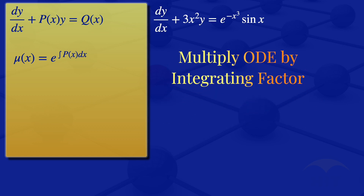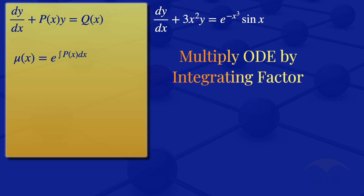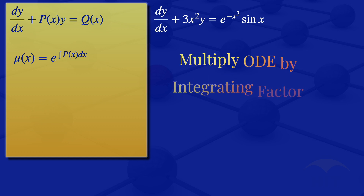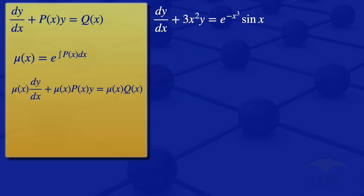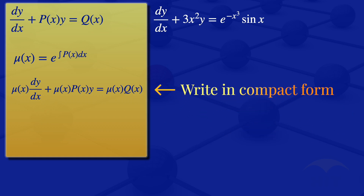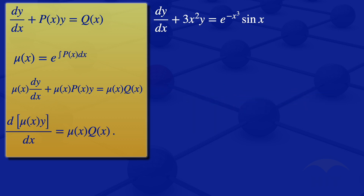We then multiply the given equation by the integrating factor to obtain: mu of X multiplied by the derivative of Y with respect to X plus mu of X multiplied by P of X multiplied by Y is equals to mu of X multiplied by Q of X. We can then write this equation in compact form as the derivative of mu of X times Y with respect to X is equals to mu of X multiplied by Q of X.